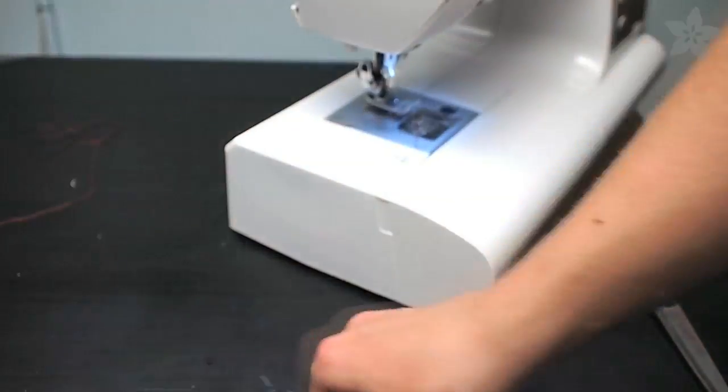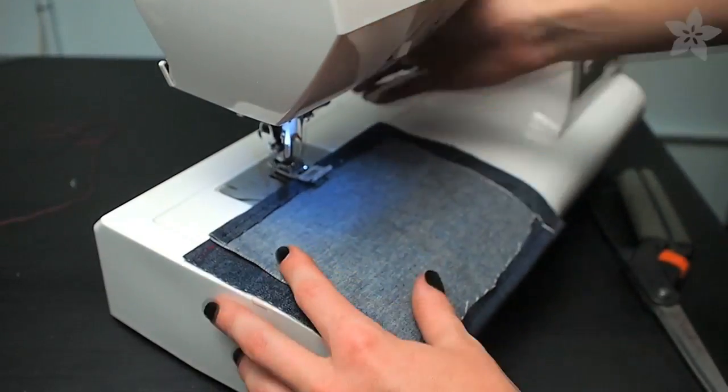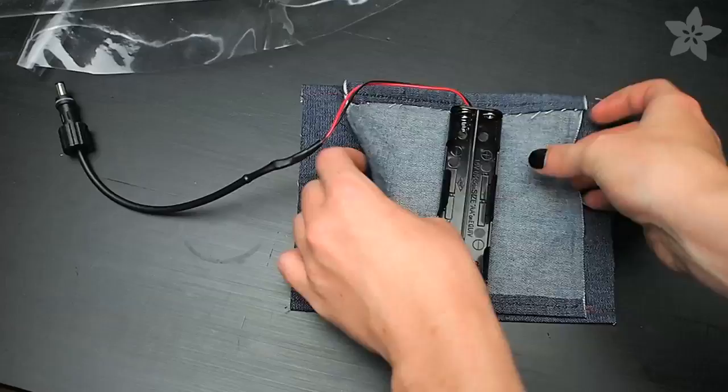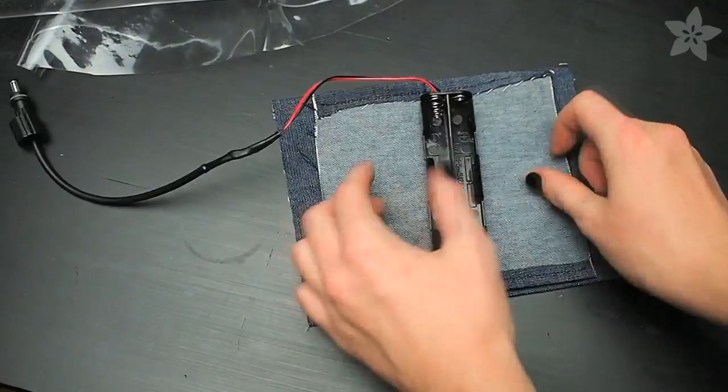Cut and hem another piece of fabric and line the two pieces up right sides together. Then stitch a line right down the middle. One of these pieces will grip the battery holder and the other one will grip the top tube of the bicycle.